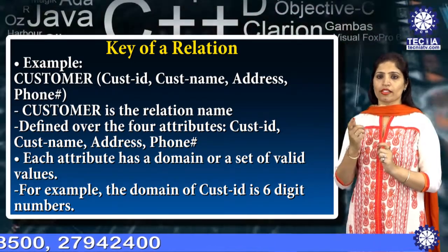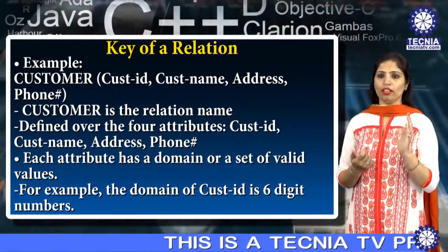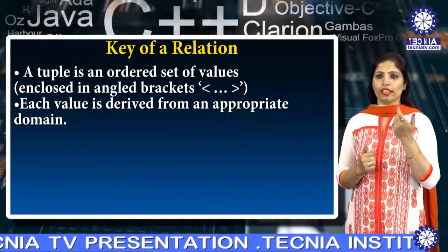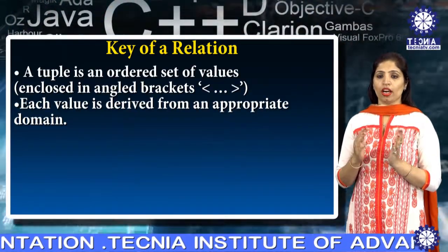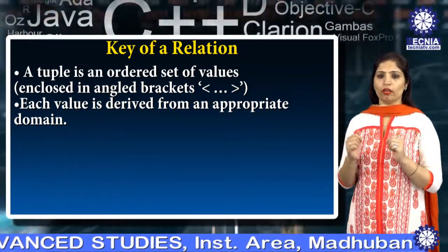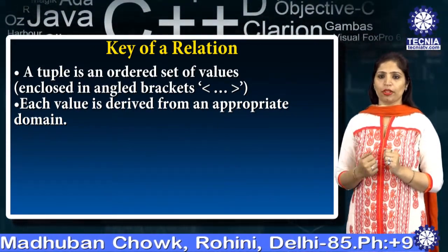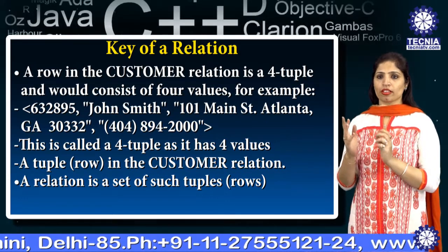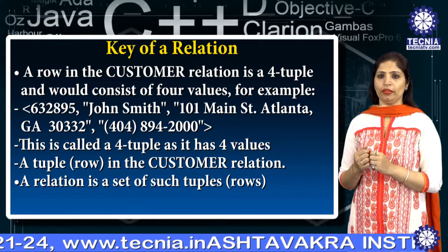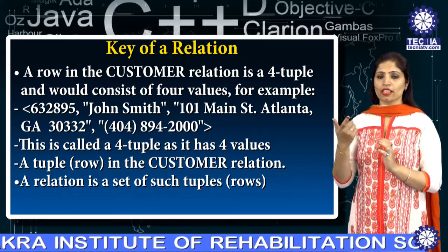Each attribute has a domain, or set of valid values. For example, the domain of the customer ID is a six-digit number containing valid values. A tuple is an ordered set of values enclosed in angular brackets, and each value is derived from an appropriate domain. A row in the customer relation is a four-tuple and consists of four values — that is why it is called a four-tuple.